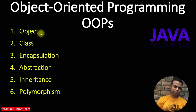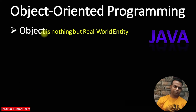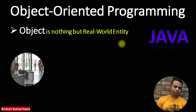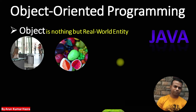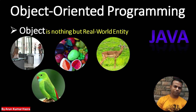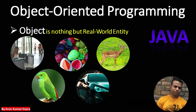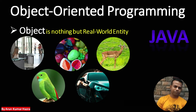Our first concept is object. So what is an object? In object oriented programming, an object is nothing but any real world entity. Any real world entity means anything that exists in the real world. So it can be an employee, it can be fruits, it can be animals, it can be birds, it can be cars, or anything that exists in the real world. And all these entities we can call as an object.